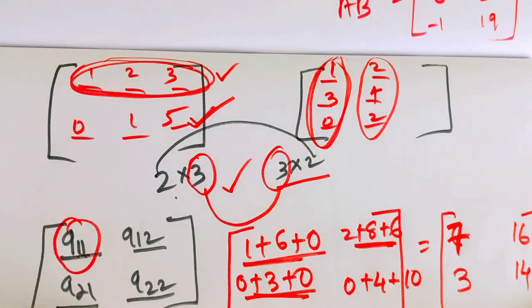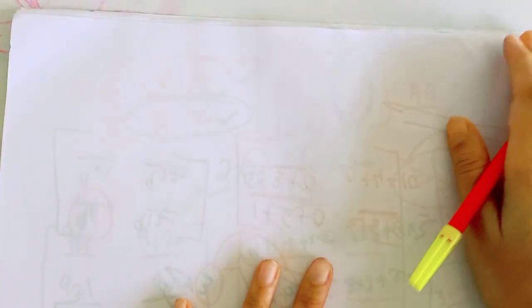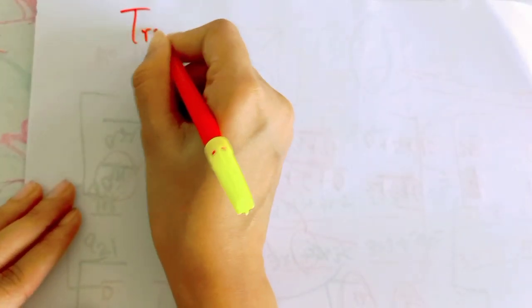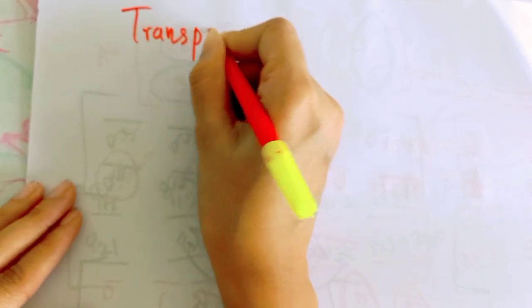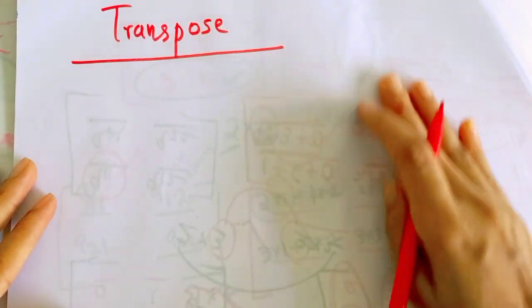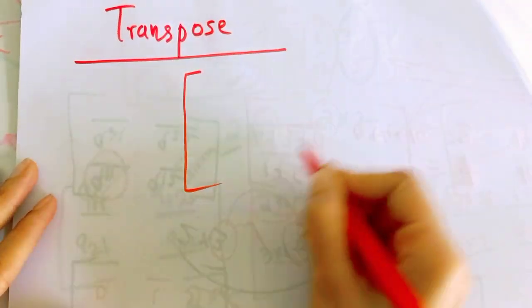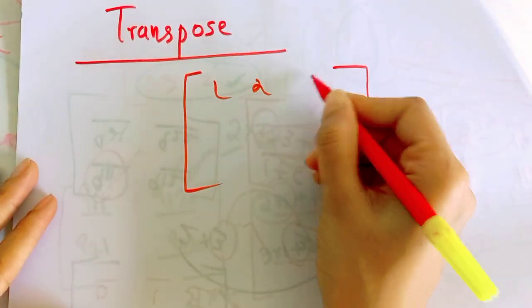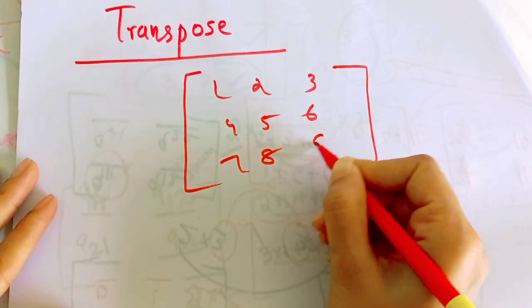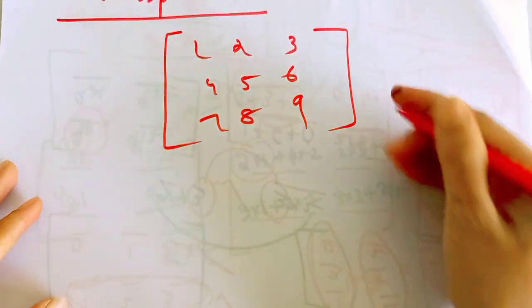Next, I will explain another important topic: Transpose of a matrix. What is a transpose? We have a matrix: 1, 2, 3, 4, 5, 6, 7, 8, 9. This matrix has a transpose.